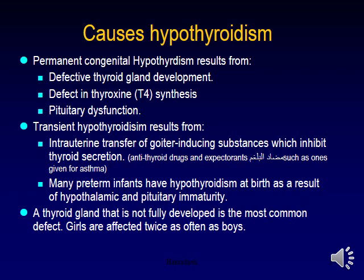Permanent congenital hypothyroidism results from defective thyroid gland development, defects in thyroxine synthesis, or pituitary dysfunction. Transient hypothyroidism results from intrauterine transfer of goiter-inducing substances which inhibit thyroid secretion. Many preterm infants have hypothyroidism at birth as a result of hypothalamic and pituitary immaturity. A thyroid gland that is not fully developed is the most common defect.